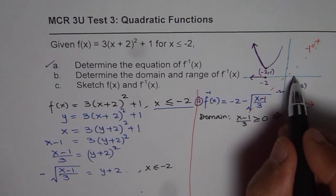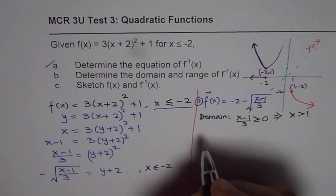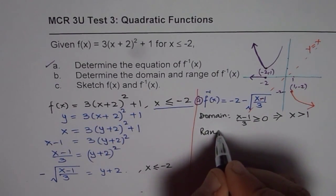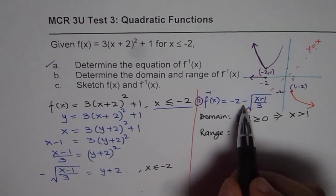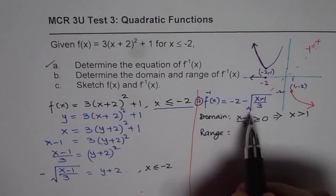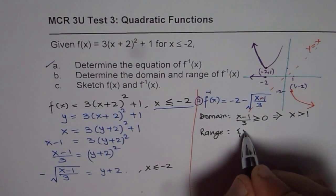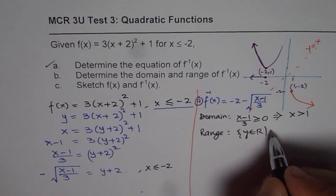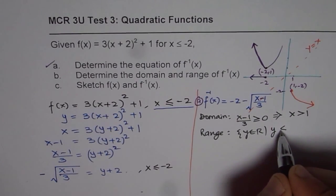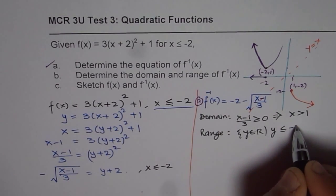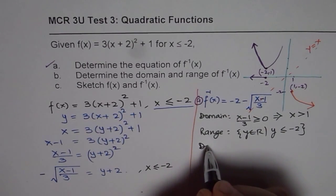As far as the range is concerned, this function is reflections. It goes down 2 units down. So the range is that y belongs to real numbers where y is less than or equal to minus 2.